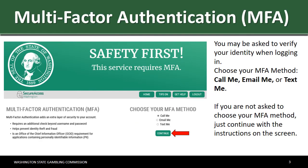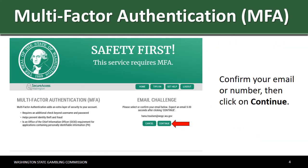You may be asked to verify your identity when logging in. Choose your MFA method: call me, email me, or text me. If you are not asked to choose your MFA method, just continue with the instructions on the screen. Confirm your email or number, then click on Continue.